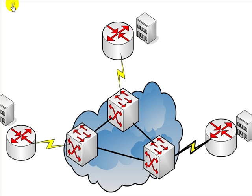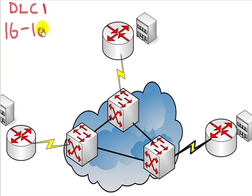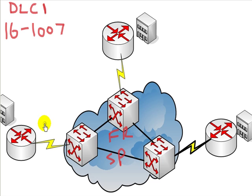An important term to be familiar with when using a PVC is DLCI, commonly referred to as DALC. It stands for data link connection identifier. A DALC is a logical number in the range of 16 up to 1007. For CCNA purposes we just need to know that range. It's issued by your frame relay service provider, so we don't get to pick it. The DALC is used to identify the PVC between the CPE and the frame relay switch.